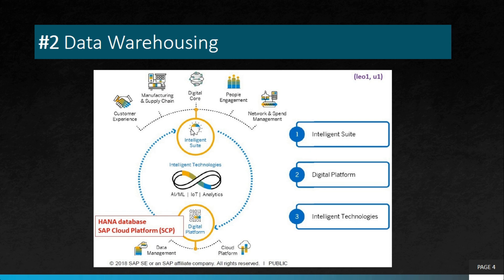The second project is data warehousing. SAP HANA can be used to create a data warehouse that handles large volumes of data. This includes a lot of master data and transaction data. This allows businesses to gain insights into their operations, optimize processes, and improve decision making.